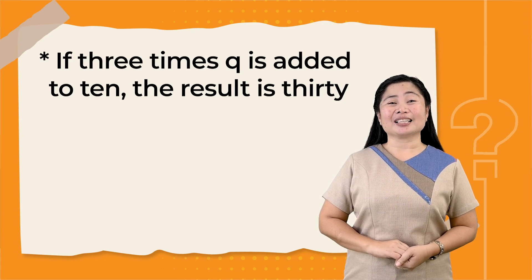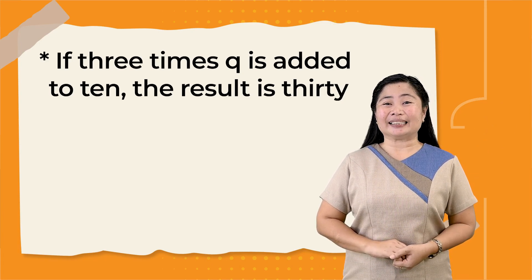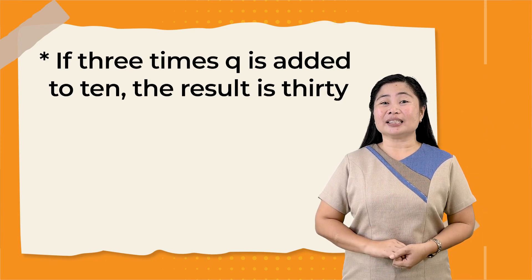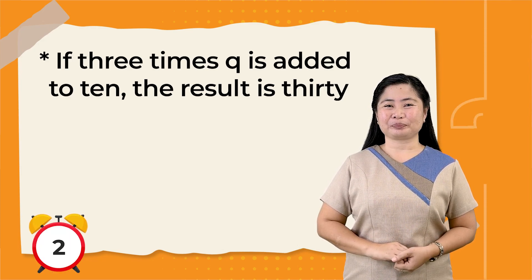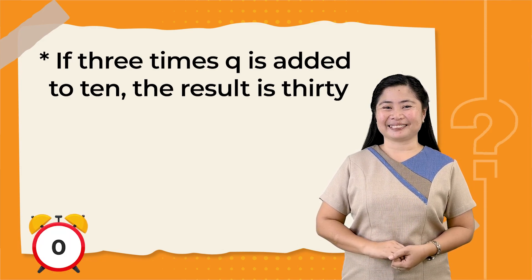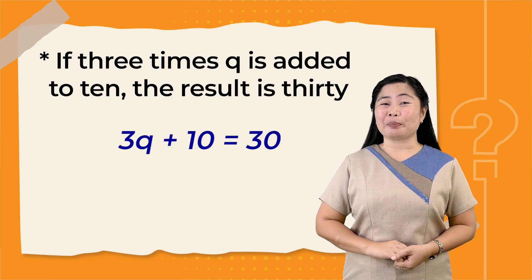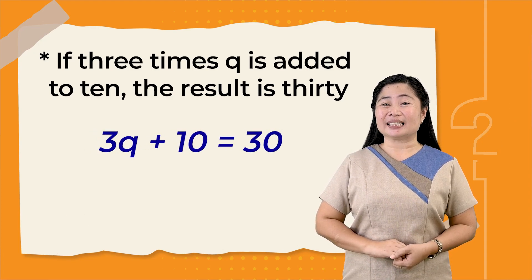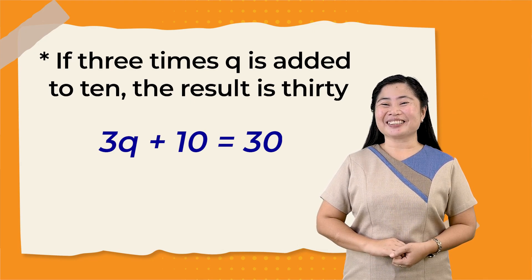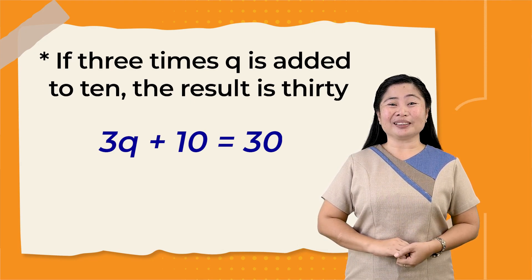Okay, last one: If 3 times Q is added to 10, the result is 30. If you got 3Q plus 10 is equal to 30, then you made it right! Congratulations! Job well done!